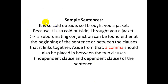Let's look at an example sentence. 'It is so cold outside, so I brought you a jacket.' Here one clause is dependent and one is independent. To join them, we use the subordinating conjunction 'so.' Alternatively: 'Because it is so cold outside, I brought you a jacket' — using 'because' as the subordinating conjunction.